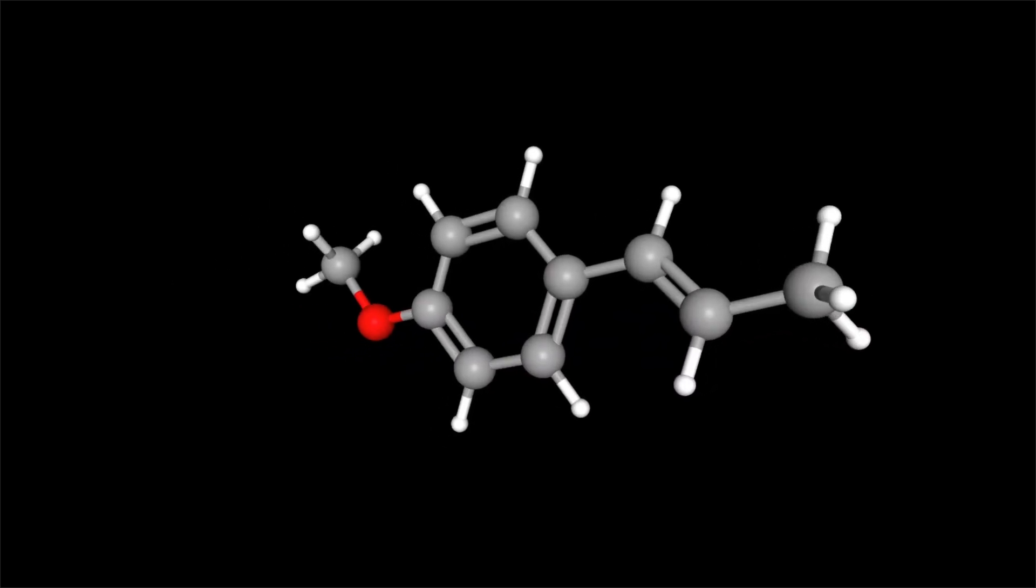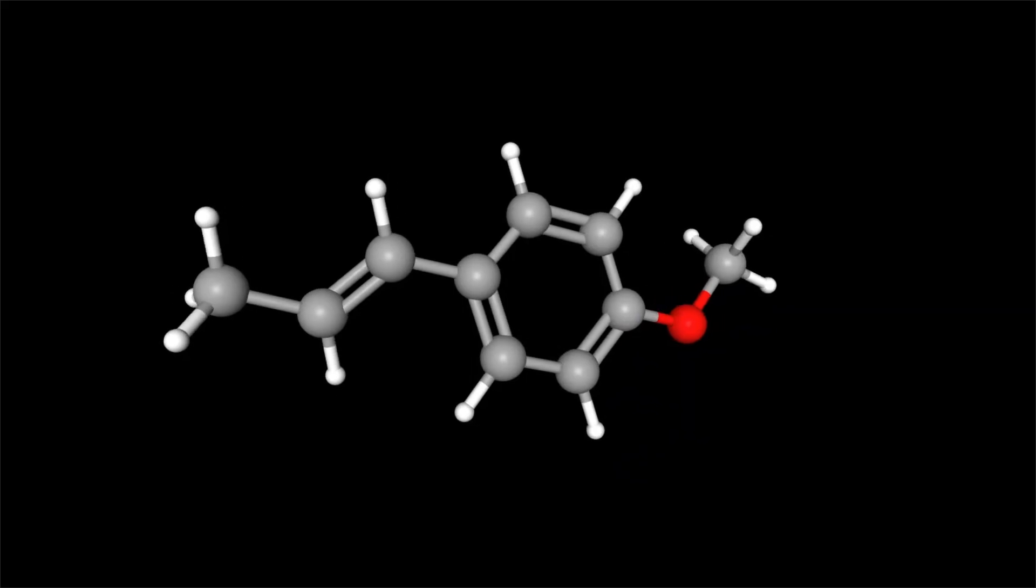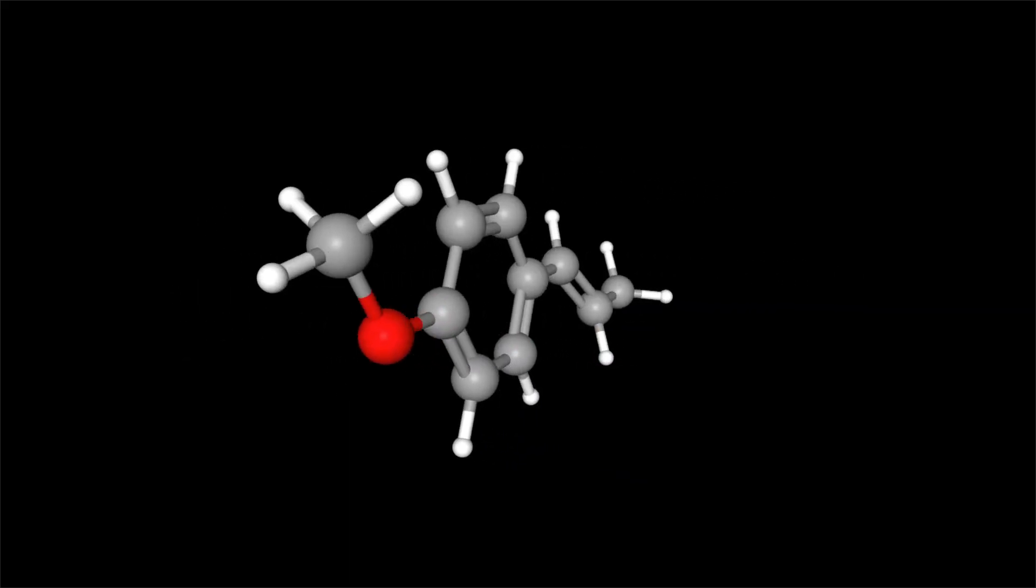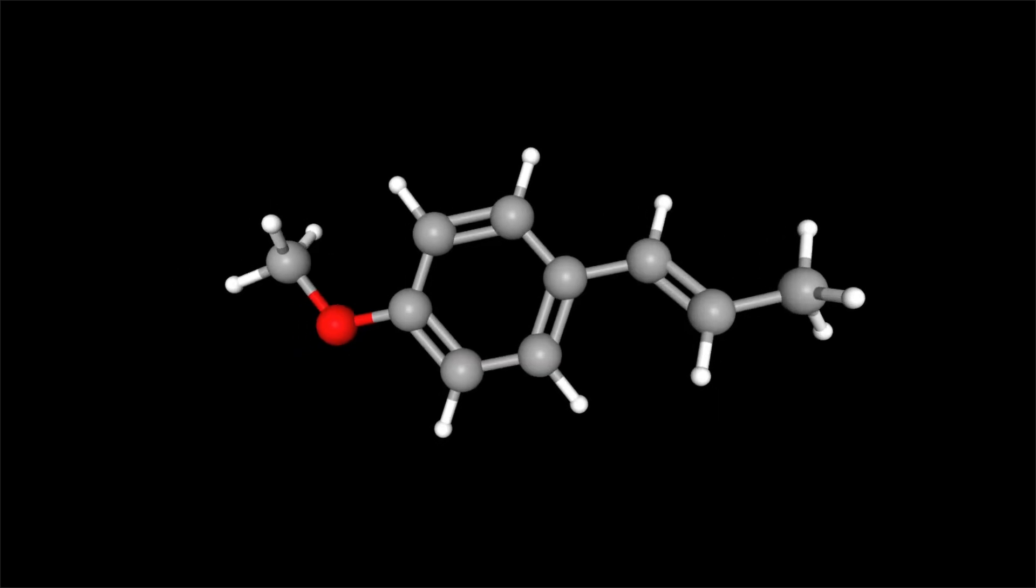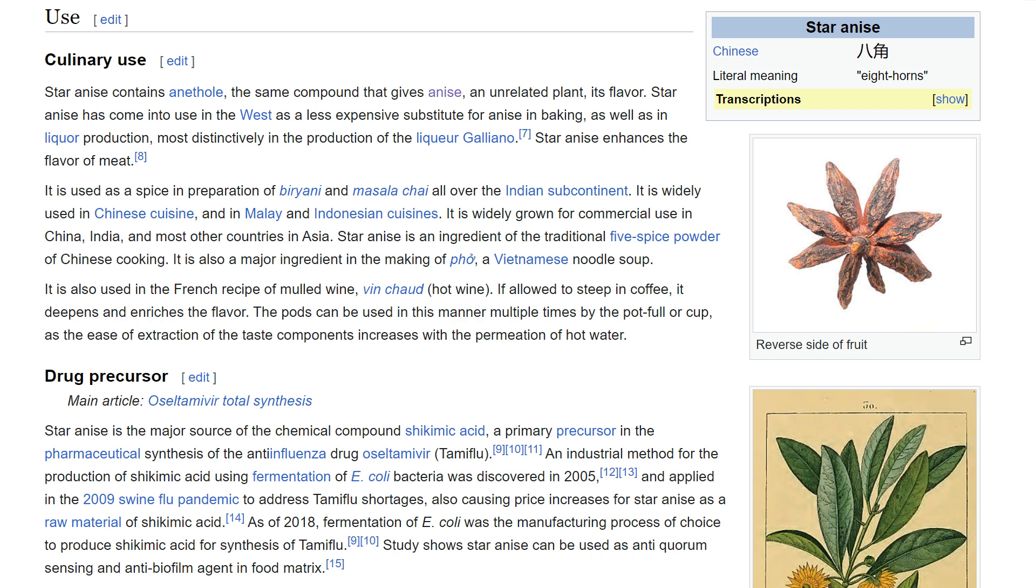Anethole has a structure similar to that of nitrobenzene. We can see that it has a benzene ring with some groups hanging off of it. However, unlike nitrobenzene, this is actually non-toxic. Anethole itself is a large component of the odor and flavor of anise. It is a colorless, fragrant, mildly volatile liquid.